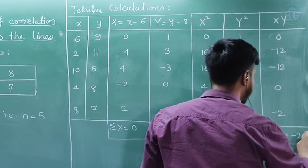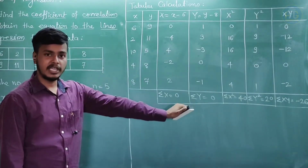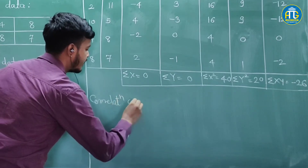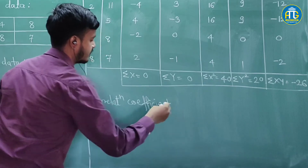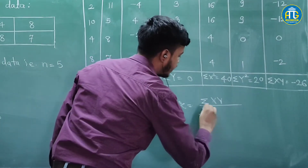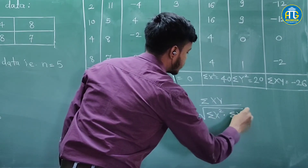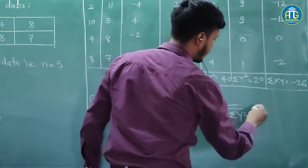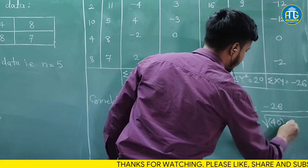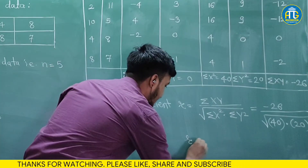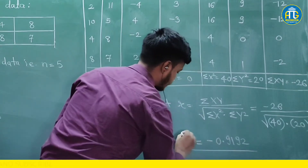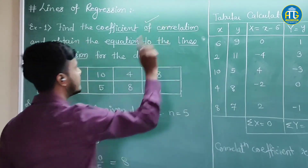So summation XY is minus 26. Now we can find the coefficient of correlation: r is equal to summation XY upon under root of summation X square into summation Y square. Substituting: minus 26 upon under root of 40 into 20. When you solve this, you get the coefficient of correlation as minus 0.9192. We are done with the first part.